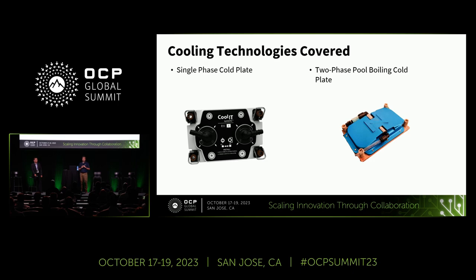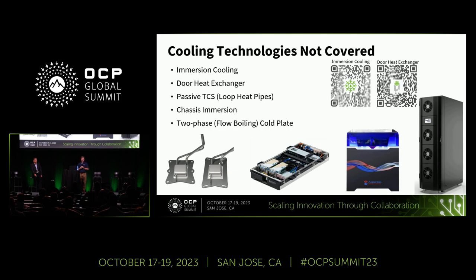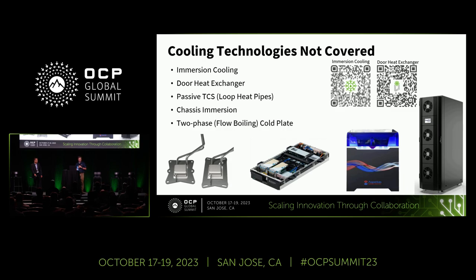What technologies are covered? Single phase cold plate and two phase pool boiling cold plates from the CDU down to the cold plate. What's not covered? Immersion and door heat exchanger — these are both OCP projects that have a vibrant community. The passive TCS or loop heat pipe requirements doc is underway; Ben and Vadim are working through that, and if you want to contribute, I'm sure they'd be very happy to have you. Chassis immersion is not covered, nor is two phase flow boiling, as there were no member companies that stepped up to contribute to that one.